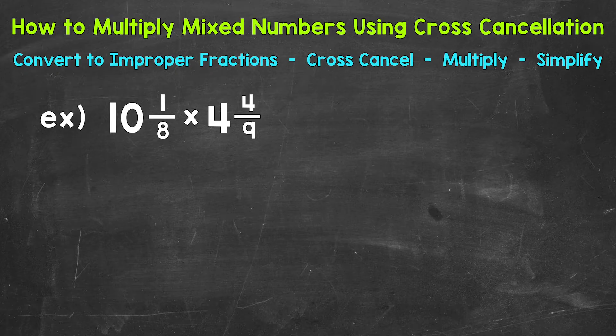Let's jump into our example where we have 10 and 1 eighth times 4 and 4 ninths. Now the first thing that we need to do, we need to convert these mixed numbers to improper fractions.